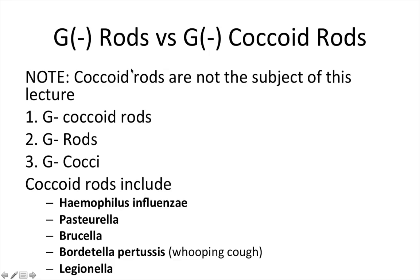First, just a distinction between gram-negative rods and gram-negative coccoid rods. This lecture is going to be about gram-negative rods, not gram-negative coccoid rods. In gram-negative bacteria, there are a few different shapes: the coccoid rods, the rods, and the cocci. The coccoid rods — just to quickly mention — include this group here, which we won't be talking about in this lecture, but I will have a lecture coming up later that focuses on the coccoid rods.